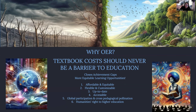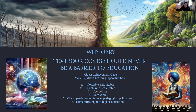I'm going to dive into five parts: affordable and equitable; flexible and customizable for you folks; up-to-date resources with the information cycle; accessible; global participation and cross-pedagogical pollination; and lastly, this is just a personal belief of mine — humanity's right to higher education.